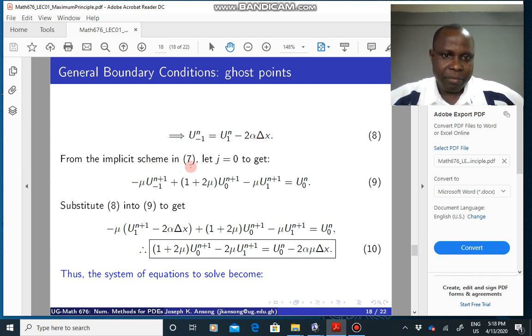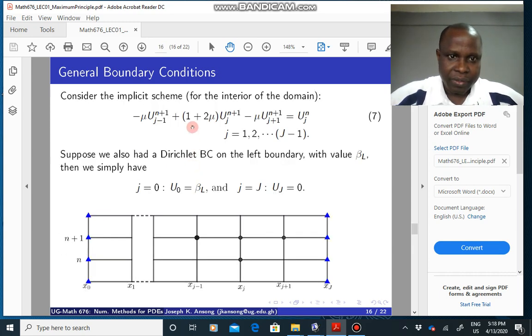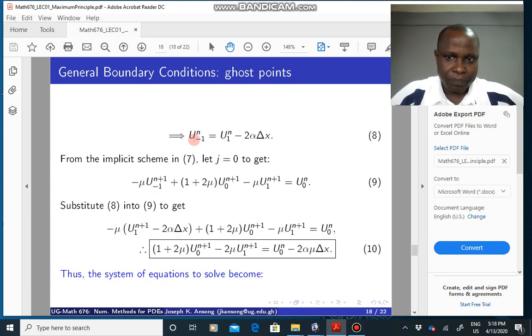Now, from the implicit scheme in 7, note that the implicit scheme here, which is 7 here, this is for j, the interior point, j equals 1 to j minus 1. But in order to incorporate the fictitious point or the ghost point, what you do is that you can put j equals 0 inside in this scheme here. When you put j equals 0 here, when you put j is 0, you end up with this. So note that you also have a u minus 1 here. So you can really substitute this guy into here if you make n to be n plus 1. So you can plug that into here and manipulate the resulting expression and then you have equation 10.